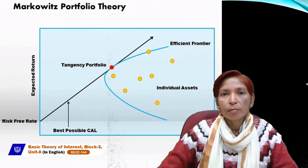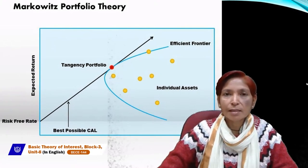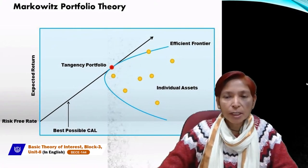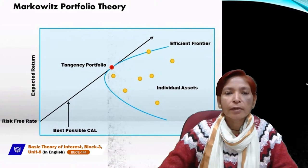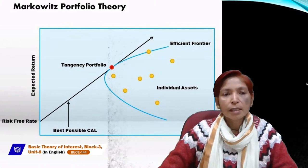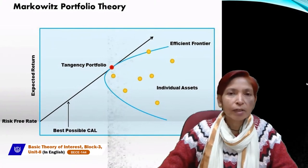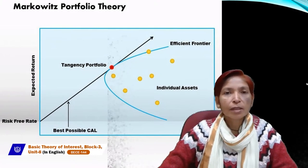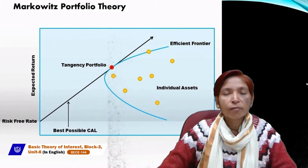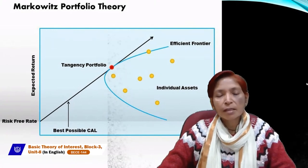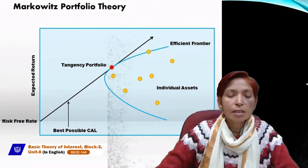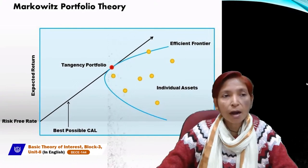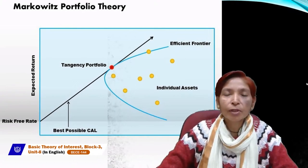Individual assets may include different types like shares, bonds, and debentures. The efficient frontier is indicated by that red point, which represents a tangency portfolio. At this point, the investor gets maximum return, maximizes wealth, and reduces risk. Expected return will be maximum where the curve is tangent to the best possible capital asset line. This is the graph of Markowitz portfolio theory.